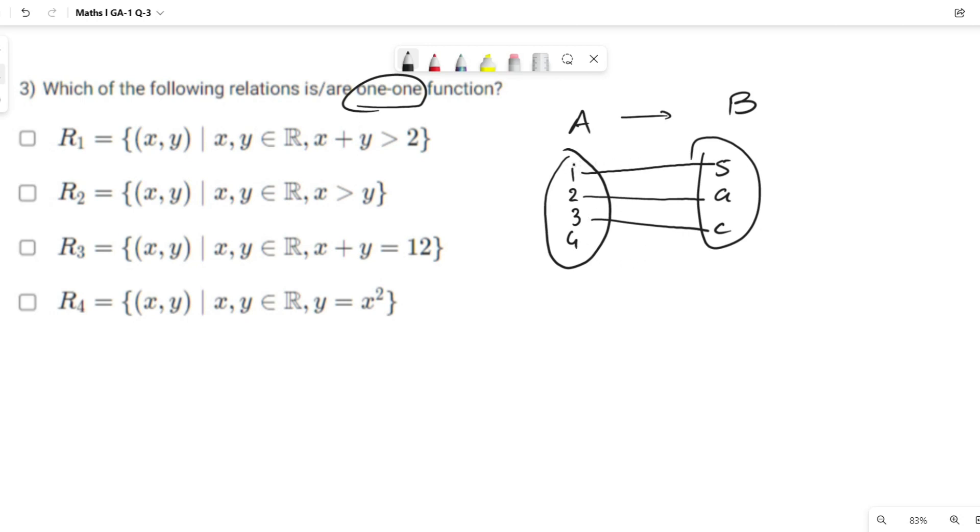Every single element of A is uniquely mapped to elements of B. This is 1-1 function and this is 1-1 function, but this is not a 1-1 function because if (1, s) belongs to relation and (2, s) also belongs...